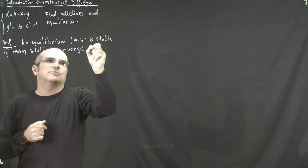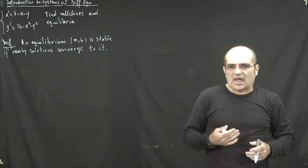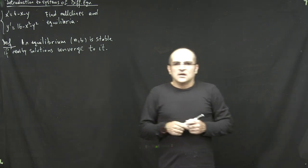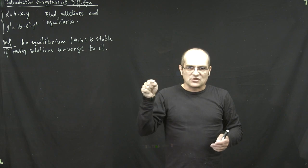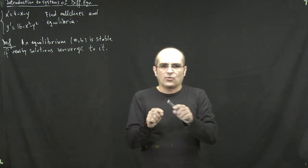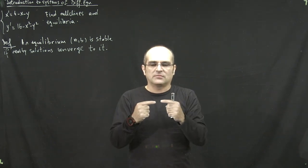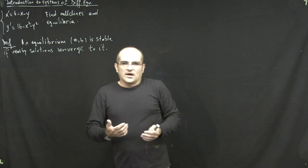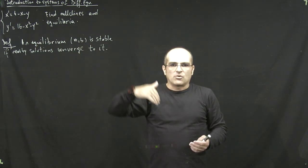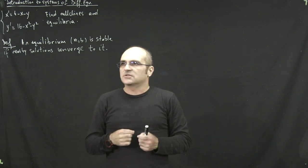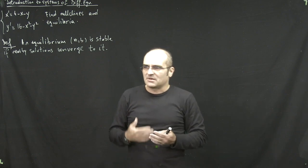This is a very intuitive definition because for systems you need a more detailed description of what happens around that point. You have 360 degrees of possibilities in terms of approaching the point or not. For a single ODE, you have the equilibrium point on the line and you move either left or right — so if you move toward the point from both sides, it's stable. For a planar system, you can approach the point, but the shape of the solution around it may reveal other important properties about the system.